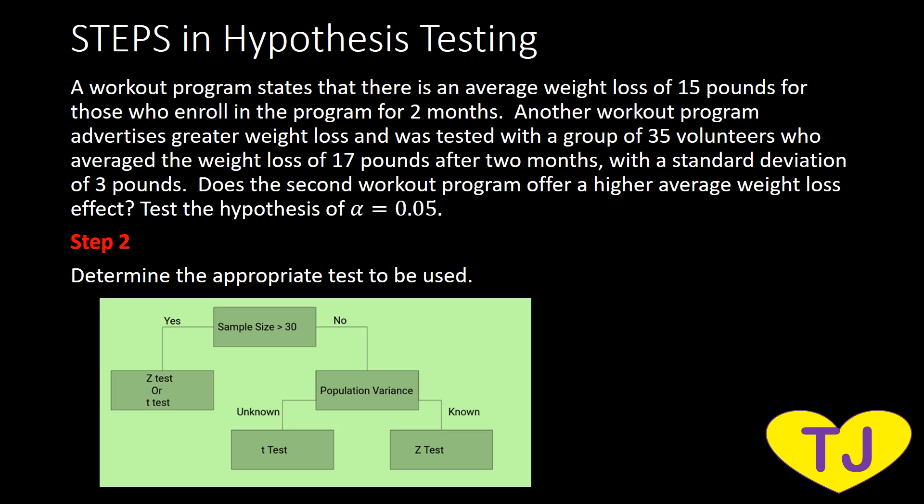Step two is to determine the appropriate test to be used. To decide between z-test and t-test, we follow a diagram. First, we check the sample size. The second workout program was tested with 35 volunteers, so our sample size is 35, which is greater than 30. When the sample size is 30 or more, the t-distribution approaches the z-distribution, so we can use the z-test. The appropriate test here is the z-test.